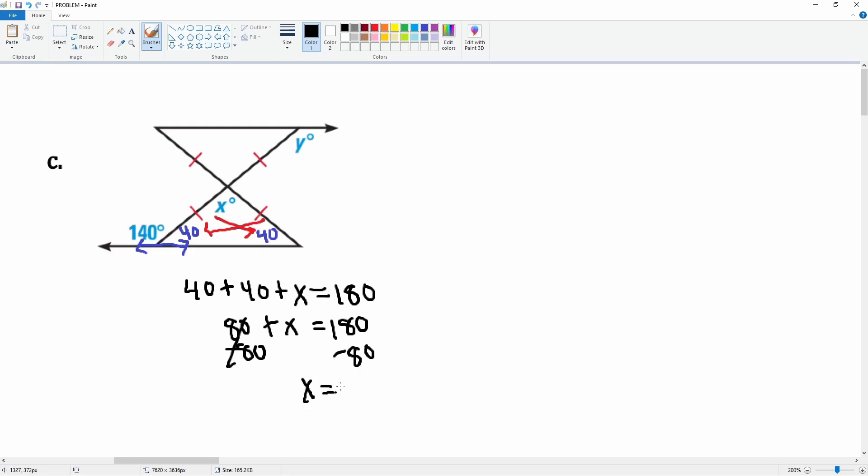So x here is 100 degrees. If this is 100 degrees, this is also 100 degrees. Notice that these show that it is the same. So this is 40, this is 40, this is 40 as well because the red marks show that they are congruent.